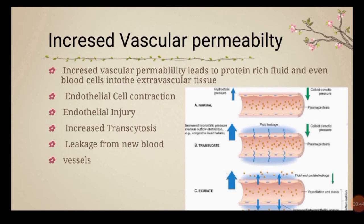The second mechanism is endothelial injury, which can occur from any cause — burns, bacterial infection, or bacterial toxins that make vessels leaky. The third mechanism is increased transcytosis within the cell.